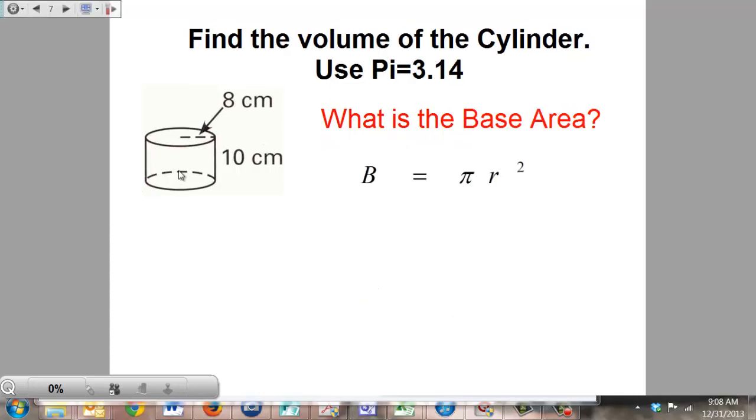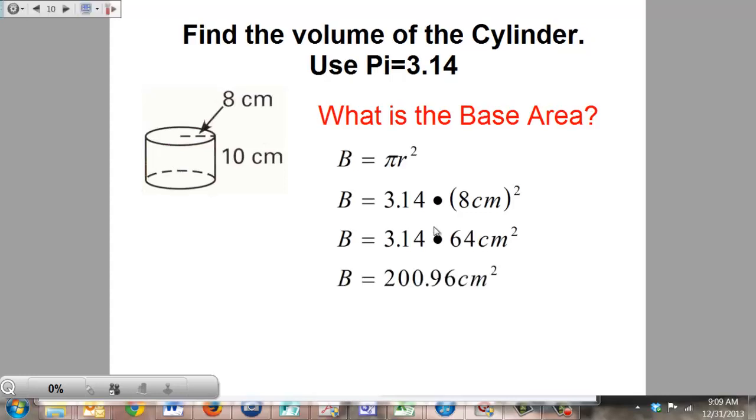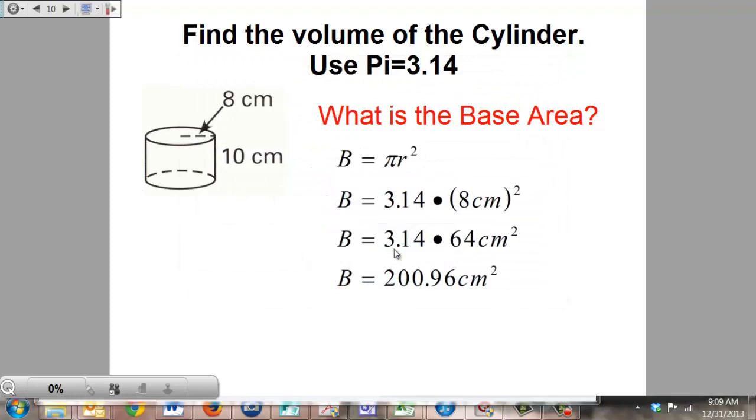Plug in what you know. You know that pi is 3.14. You know your radius is 8 centimeters. That's going to go into parentheses because you are squaring the entire thing that the radius is, both the 8 and the centimeters, giving you 64 centimeters squared. Multiply that times your 3.14, and you get 200.96 centimeters squared for your final answer.